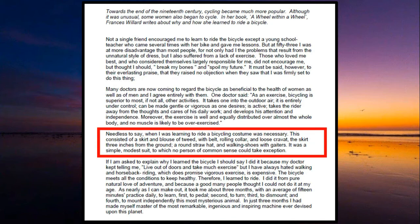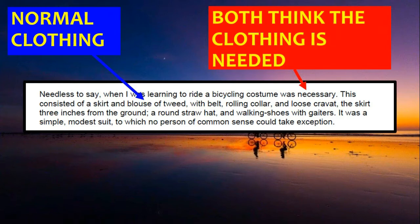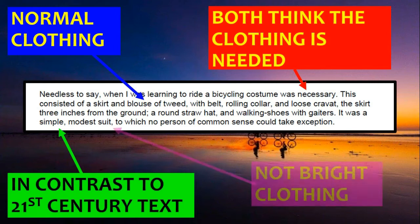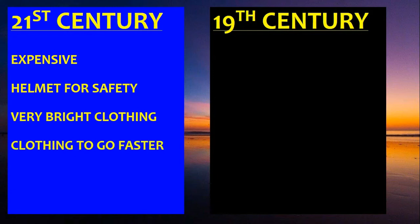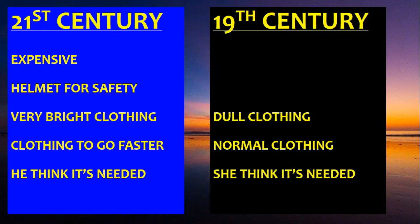In the other extract, it's really only one paragraph. The main points about clothing and equipment: she wore normal clothing — even though she thought it was a costume, it still wasn't really normal clothing. So both extracts suggest they need special equipment. In contrast to the 21st century text, it's very simple — modest, not bright. Summary: 21st century kit is expensive, he wears a helmet, it's very bright, worn for speed, and he thinks it's important. 19th century clothing is dull and normal, but she also thinks it's needed.